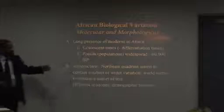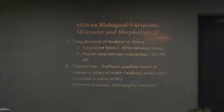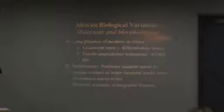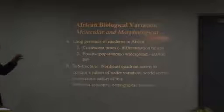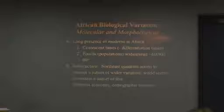The coalescence times, the times to which you get to a common ancestor for many molecules, is so old that it generally places many of them in Africa, but not all of them. We have fossils all over in Africa, in Algeria at 60,000 years BP, but we have other fossils that have been dated that are essentially modern humans to around 190,000 years ago. The Northeast Quadrant of Africa seems to contain a subset of wider variation in Africa, and maybe the rest of the world contains a subset of this.